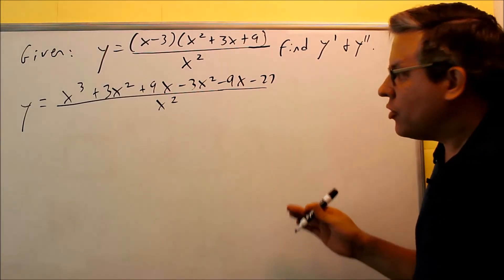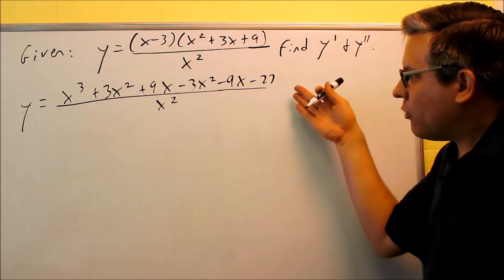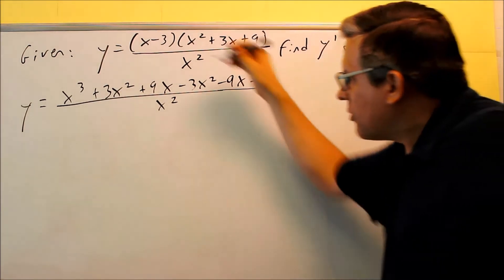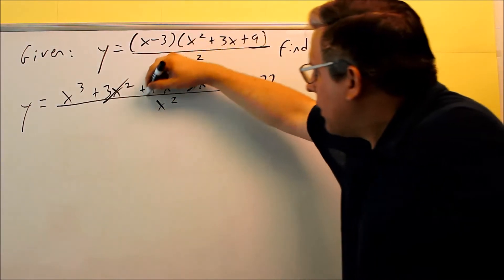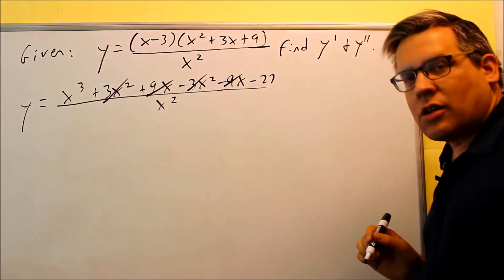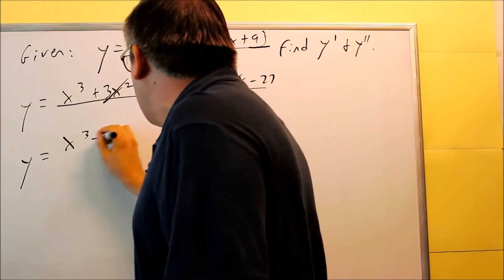So again, no calculus. All I'm doing is multiplying everything out and simplifying it first. When we take a look at this, now that we've expanded it, we notice some terms that can cancel. 3x squared and negative 3x squared cancel. 9x and negative 9x cancel. So all you're left with now is x cubed minus 27.